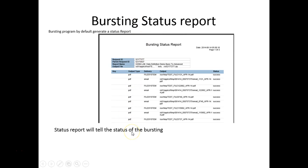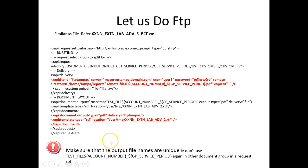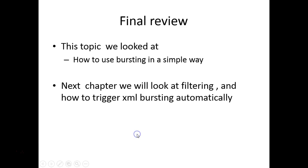There's a status report for bursting that tells you what happens. To find the email server, there's a profile called OKSSMTEAM.host where you can find the mail server. FTP works in a similar way — once you see the concept, it's basically the same. I'll attach all these files in the zip file; you can download and try them. Start with your data definition, create your XML file and template, then add the bursting control file and build onto it. I hope you got a good idea about how to burst. Thank you.